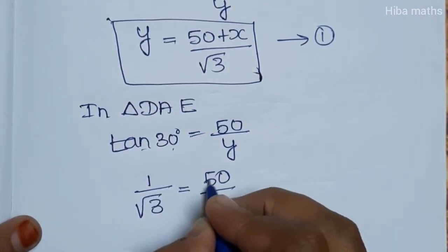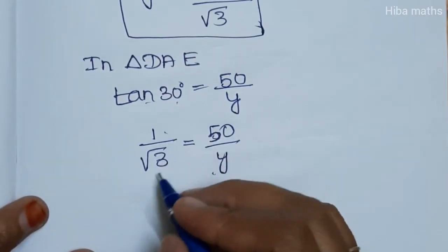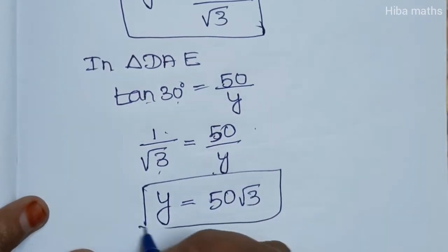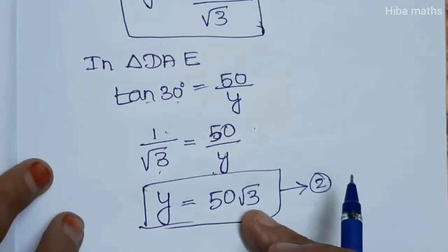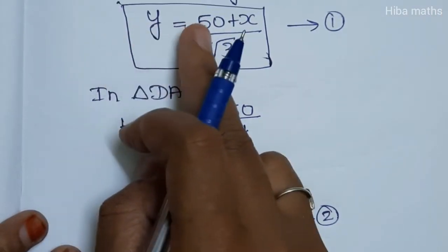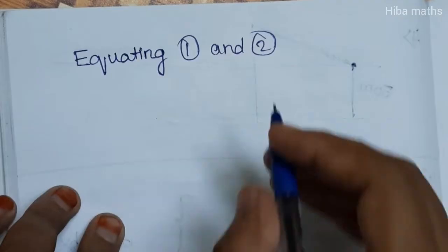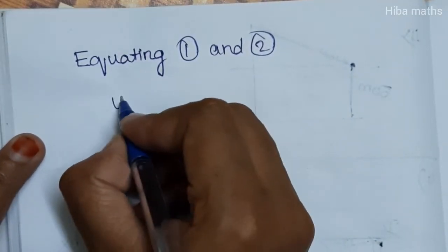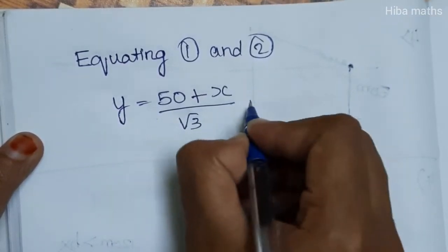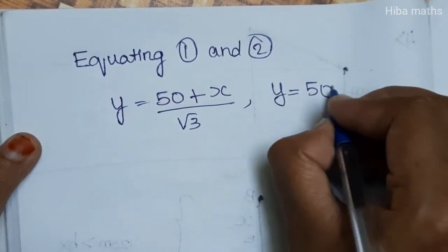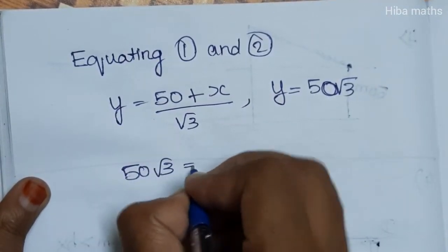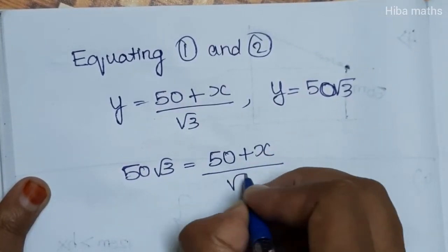Tan 30 is equal to 1 by root 3, which equals 50 by y. So y = 50 into root 3. This is our second condition. Now we equate the first and second values: y = (50 + x) / root 3, and y = 50 root 3.